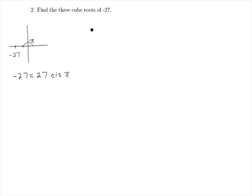And so the three roots of negative 27 are going to be the third root of 27 times the cosine of the angle pi plus 2 pi k divided by 3 because we're looking for the cube root, plus i sine of pi plus 2 pi k over 3.